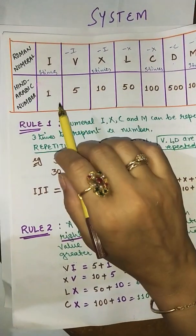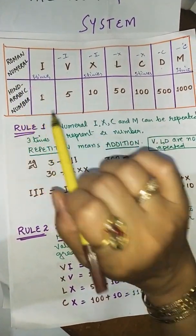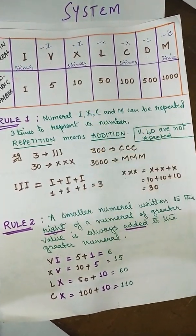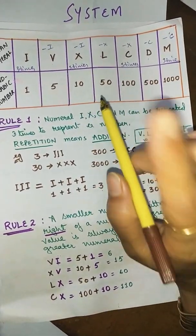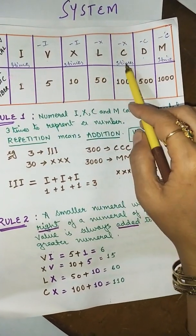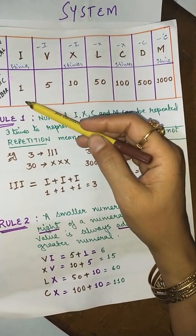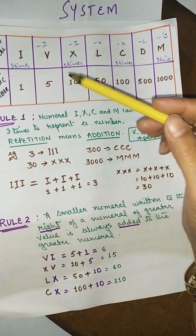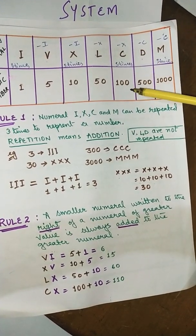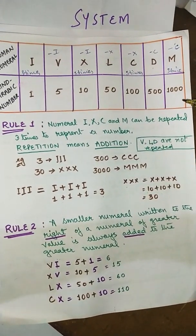Here I made one table showing Roman numerals and Hindu Arabic numbers. The seven basic symbols you should know are: I, V, X, L, C, D, and M. I stands for 1, V stands for 5, X for 10, L for 50, C for 100, D for 500, and M for 1000.